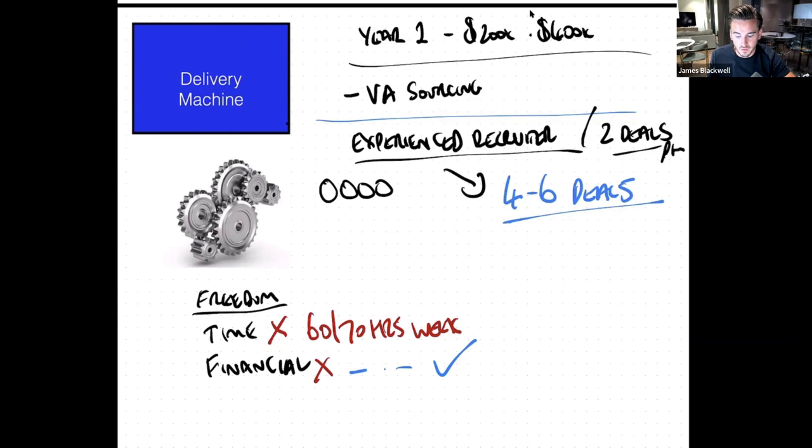But when you peel back what an experienced recruiter wants, they want more money. Number one, everyone's in recruitment to make money. You're not in it because you love it. Like, yes, you might enjoy it, but really most people fell into recruitment. And why did they fall into recruitment? Because of the opportunity to make endless amounts of money in commission because it's meritocratic. The more you can put in, the more you get out.